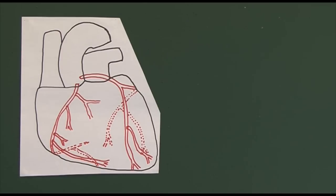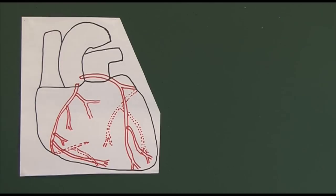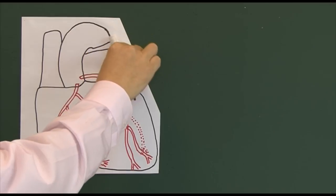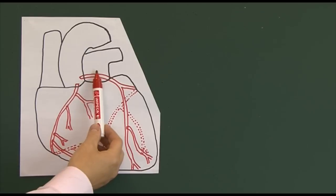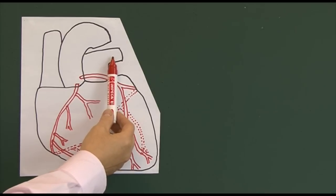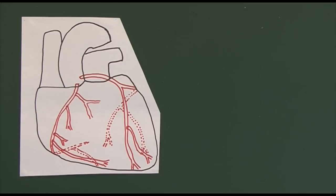Going into the right atrium, carrying blood down from the top part of the body, this would be the SVC — the superior vena cava. This is the arch of the aorta carrying blood out from the left ventricle, and this is the main pulmonary trunk carrying blood to the lungs, quickly dividing into the left main pulmonary artery and, behind the aorta, the right main pulmonary artery.